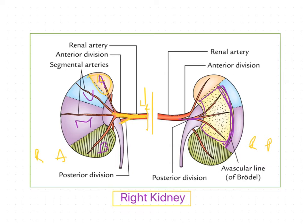These are all the vascular segments of the kidney. In the next video on renal circulation, we will discuss how the segmental arteries divide further, how these vessels supply the medulla and cortical regions, and how the veins are formed and connected to the renal vein. Thank you.